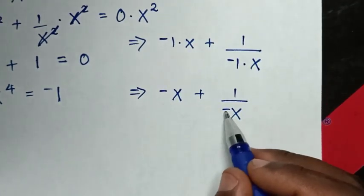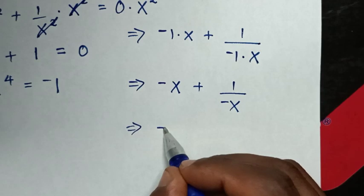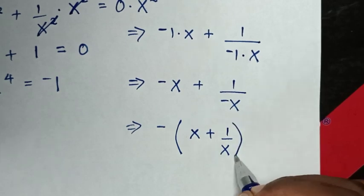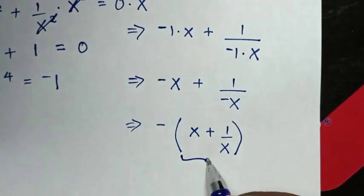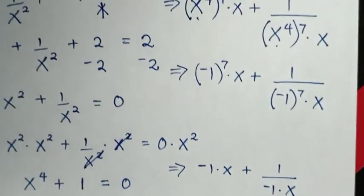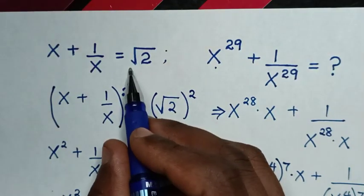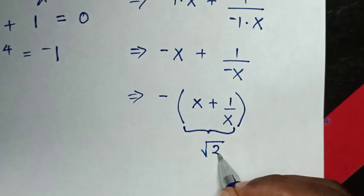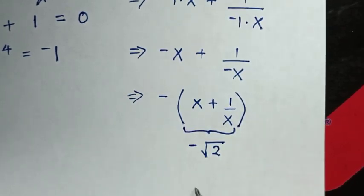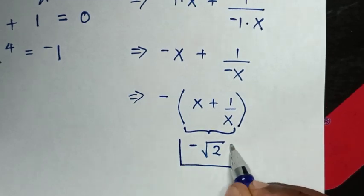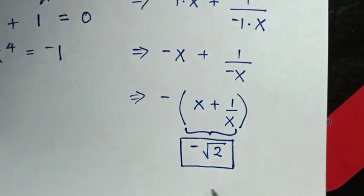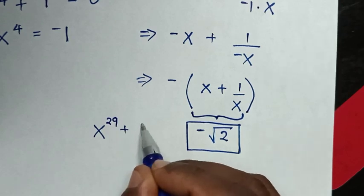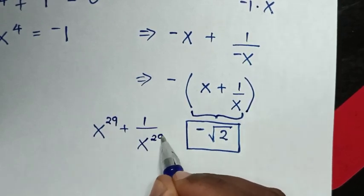Then, negative is common so we factor negative out of the bracket — it will be negative times (x plus 1 over x). But from our original equation, x plus 1 over x equals square root of 2. So we substitute square root of 2. Therefore, negative square root of 2 is our final answer — the value of x power 29 plus 1 over x power 29.